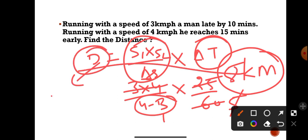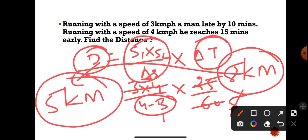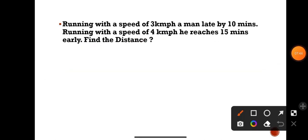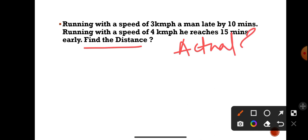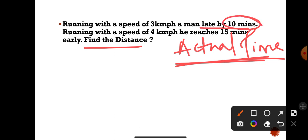The answer is 5 kilometers. This is how to solve this type of question for RRB Clerk and IBPS Clerk. For RRB PO, the same question also asks for the actual time. Since he is late by 10 minutes at 3 km/h, we need to find the usual travel time.